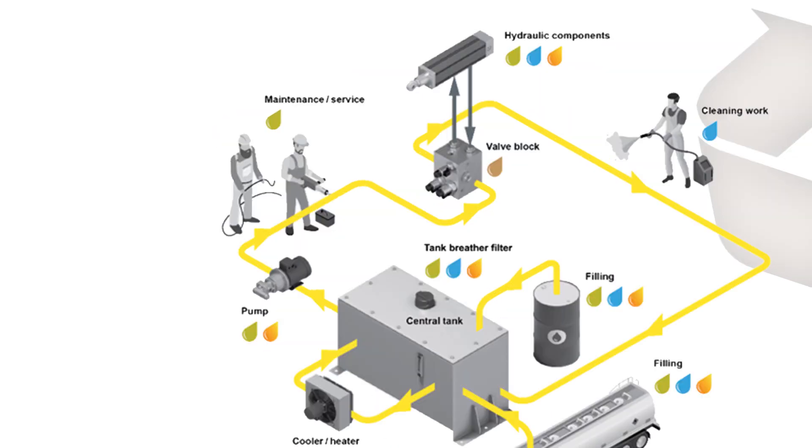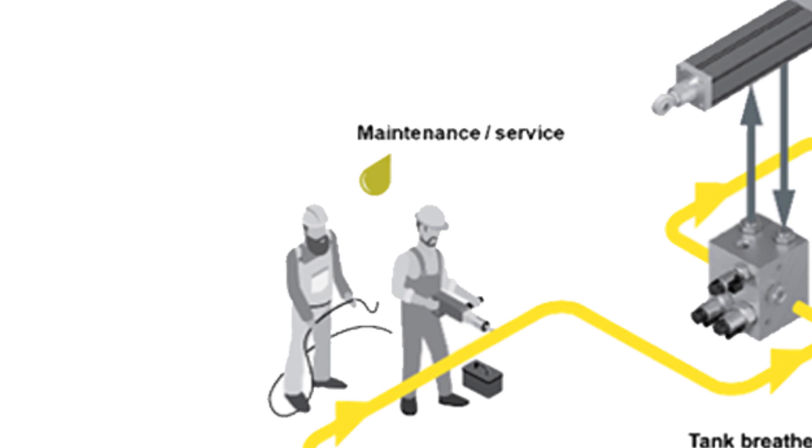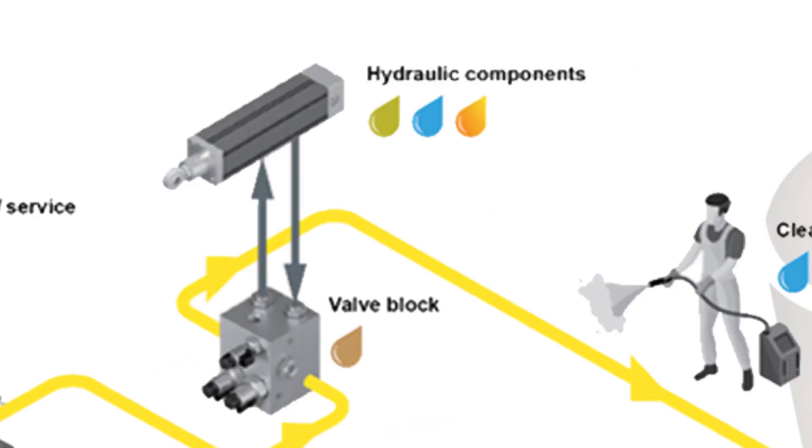The source of these contaminants can be from without or within a system, or as a byproduct of each other. Let's dive into that a level further. Contamination can be built into assemblies from the assembly process or from individual components that weren't sufficiently cleaned prior to assembly. Contamination can also be drawn into the fluid from the external environment, which is commonly referred to as ingression.